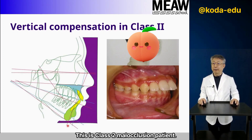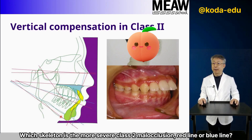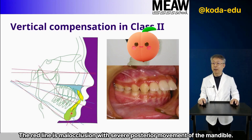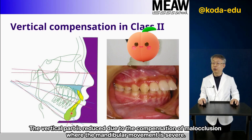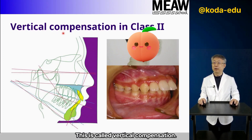The next lecture is vertical compensation. Looking at a Class 2 malocclusion patient — which skeleton shows more severe Class 2 malocclusion, the red line or the blue line? The red line is the malocclusion with severe posterior movement of the mandible. The vertical dimension is reduced due to compensation where the mandibular displacement is severe. This is called vertical compensation.